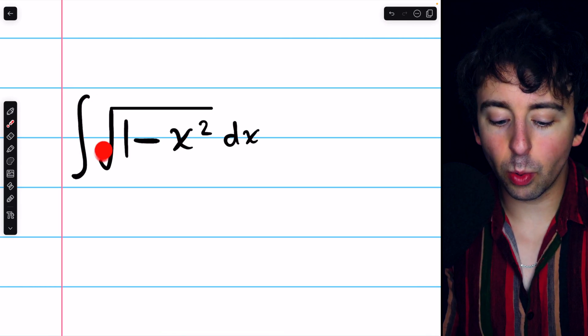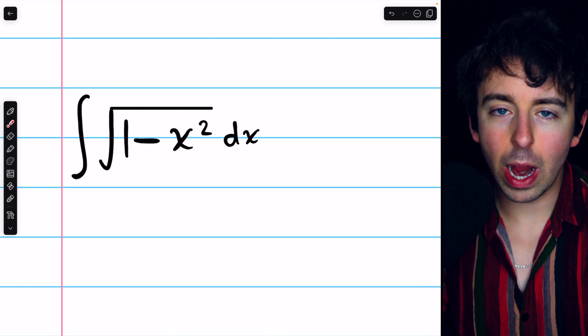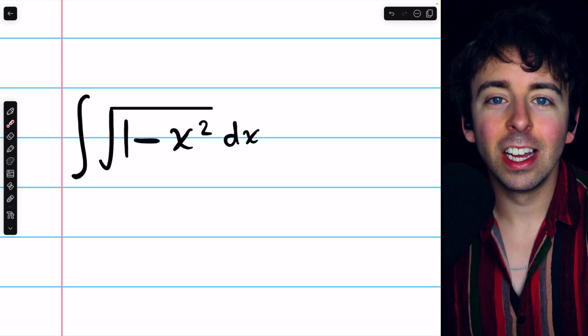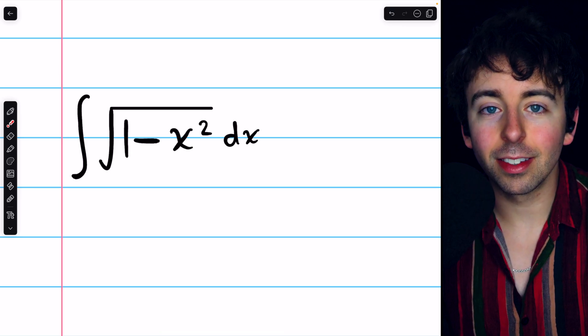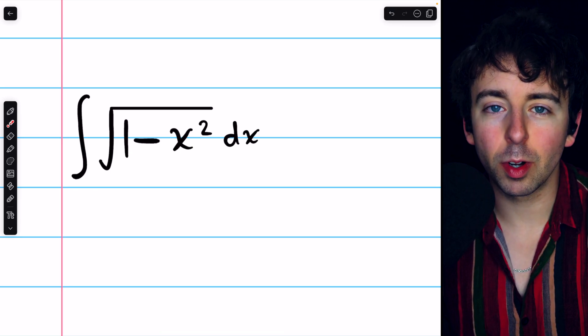In some ways, the integral of the square root of 1 minus x squared is a little bit intimidating, mostly because it's a polynomial inside a square root, which can get pretty ugly.